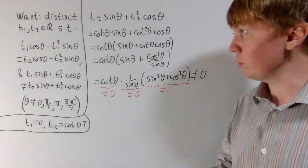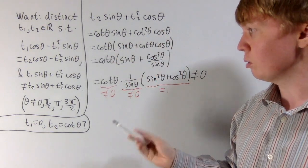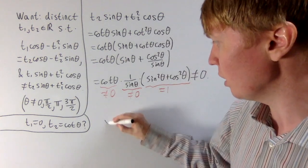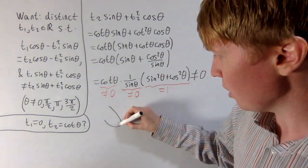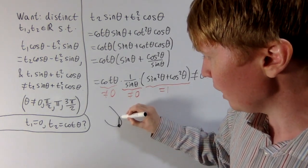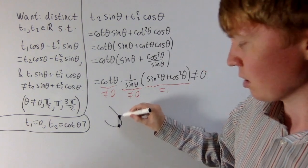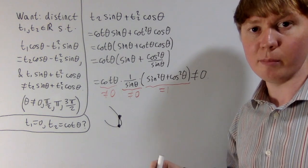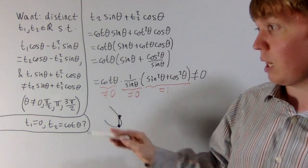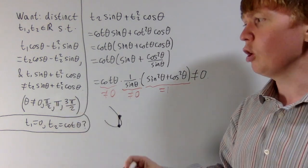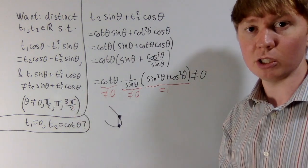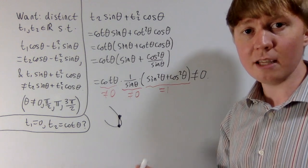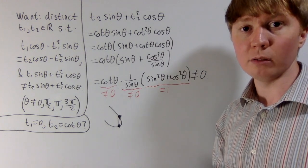We've shown that for t2 equals cot theta we get a different y value — a different output for the same input. Pictorially, starting from the point zero, there's a vertical line giving another point with the same x but different y. This means: whenever we rotate by any theta other than zero, pi, pi over 2, or 3 pi over 2, the rotation doesn't give the graph of a well-defined function.